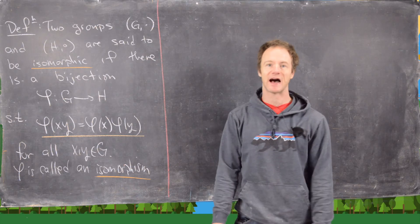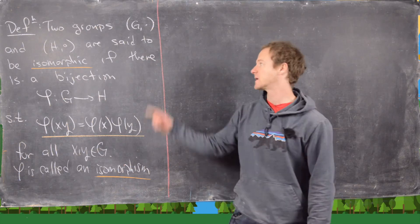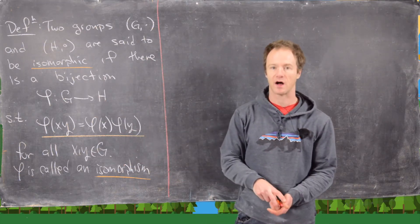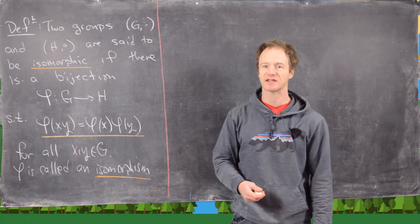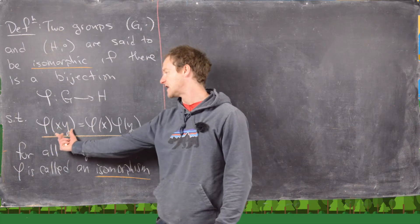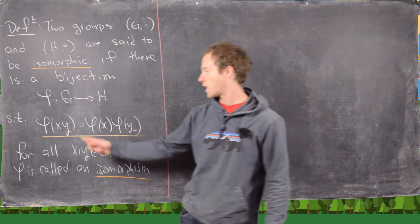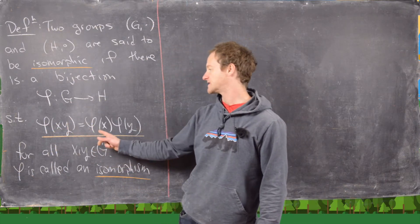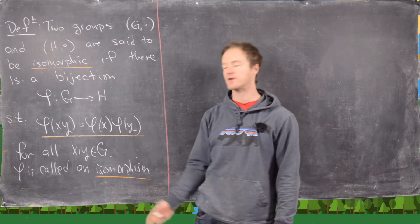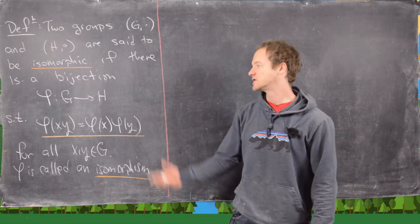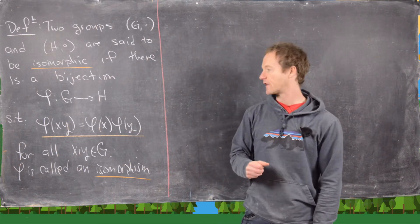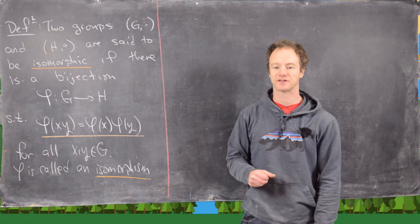These two groups are said to be isomorphic if there is a bijection — that's a function that's one-to-one and onto, in other words injective and surjective — such that if we apply phi to the product of x and y in G, we get the same thing as phi of x times phi of y, where that product is happening in H. In other words, this function is somehow compatible with the group operations on either side.